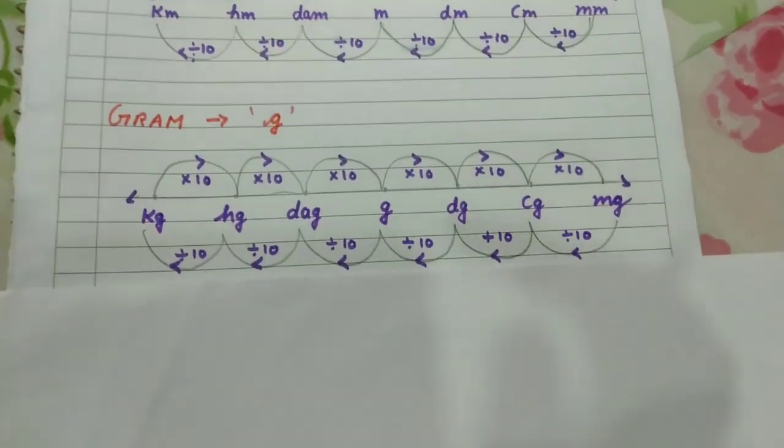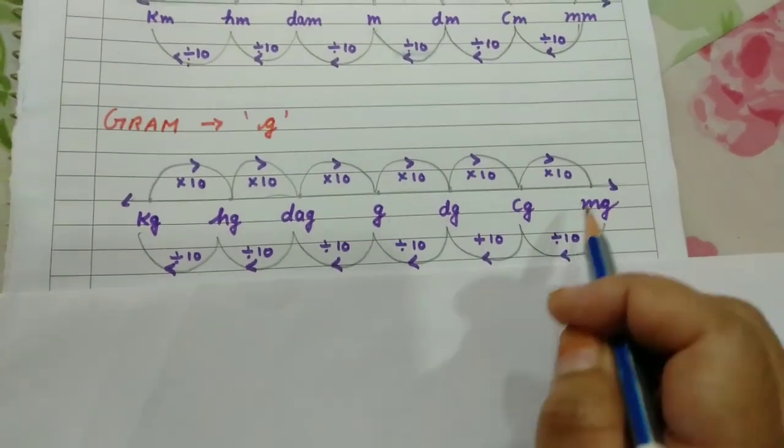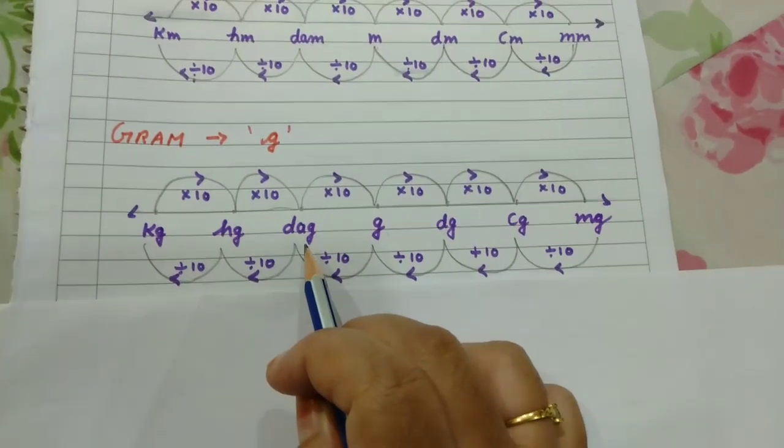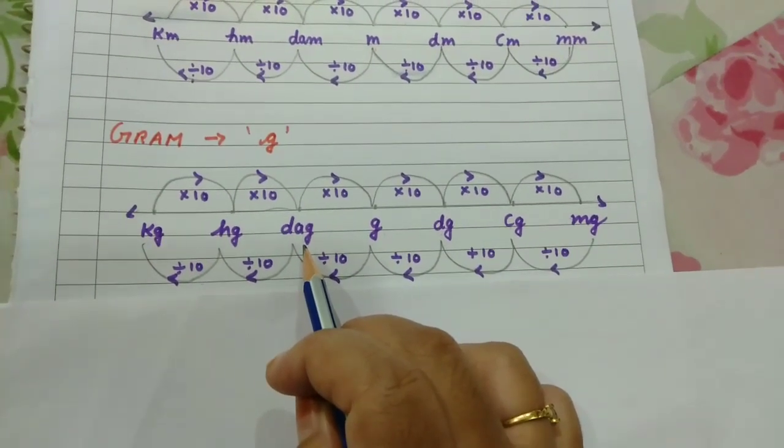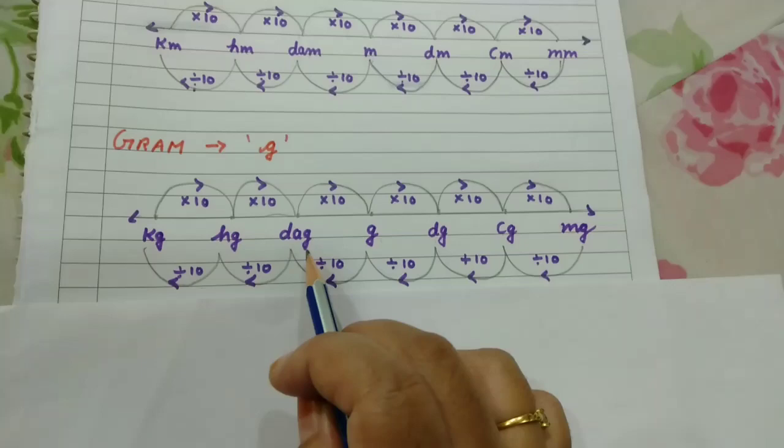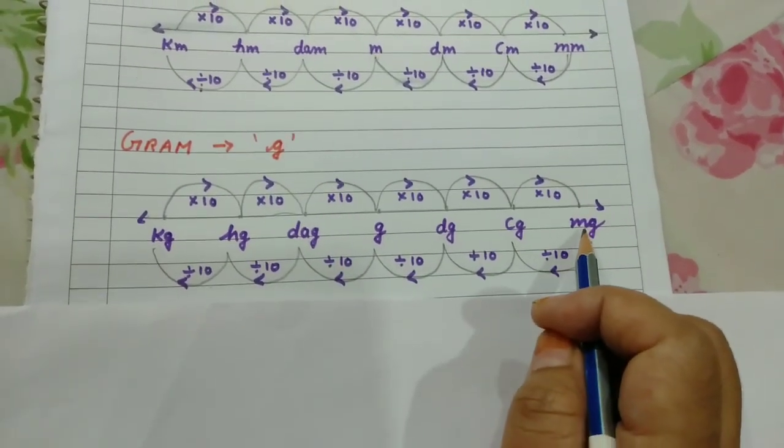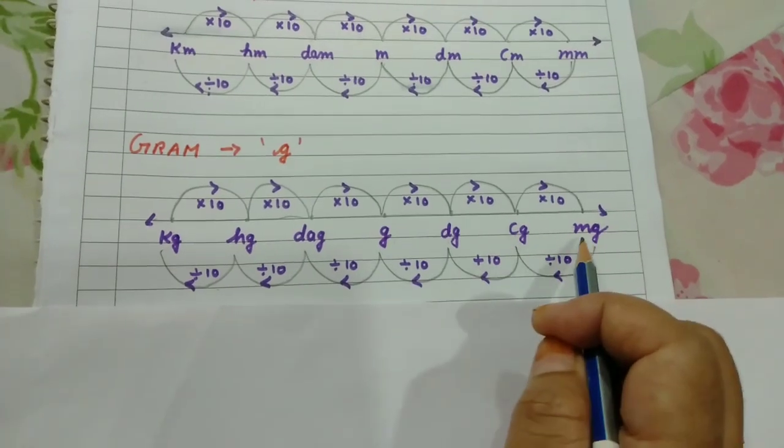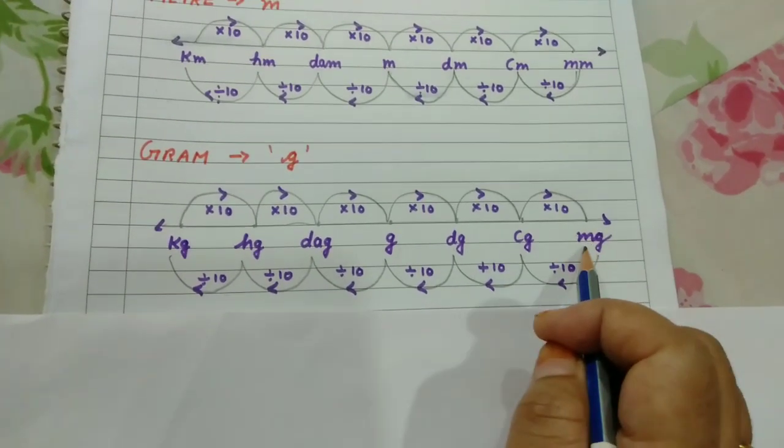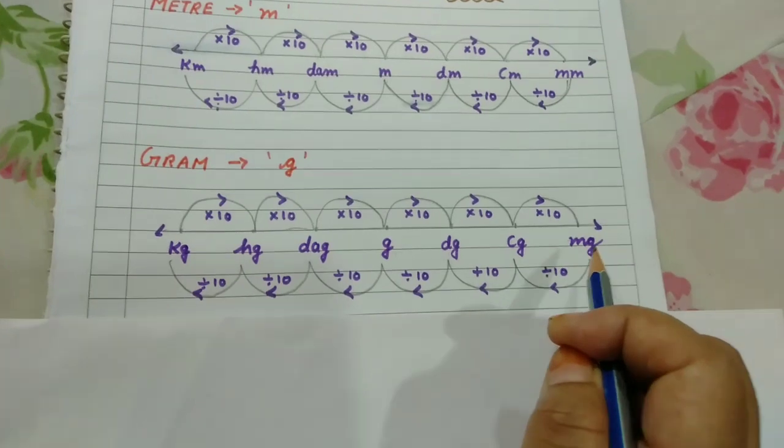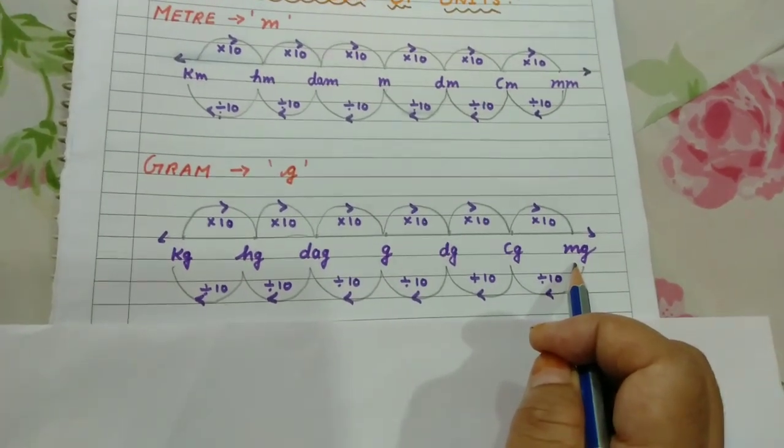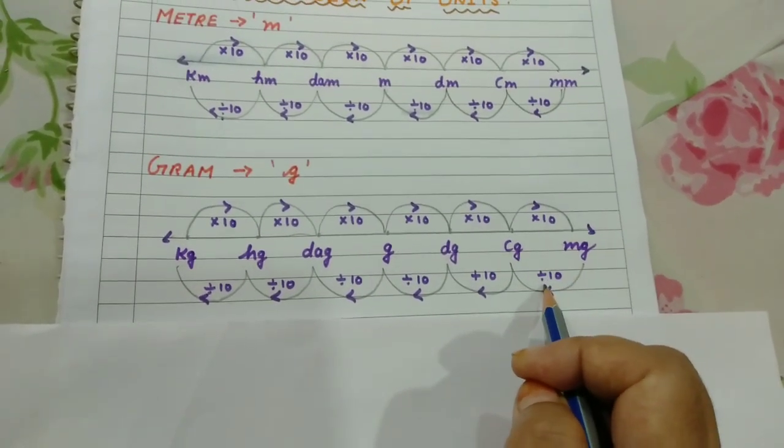Now we can see the second rule. To convert a smaller unit into a bigger unit, we divide the smaller unit by 10 for each step as we go from right to left. Suppose you have to convert milligram into centigram. Milligram is smaller and centigram is bigger than milligram. By what number do you divide? You divide by 10.